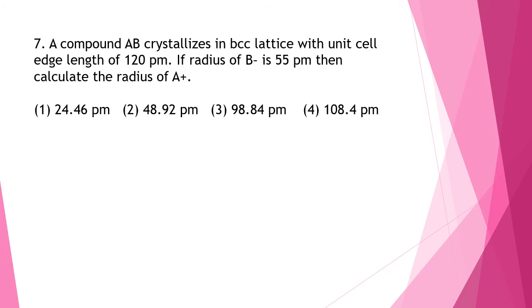Question 7. A compound AB crystallizes in BCC lattice with unit cell edge length of 120 picometer. If radius of B is 55 picometer then calculate the radius of A. So here we have to focus here. B is anion and A is cation.